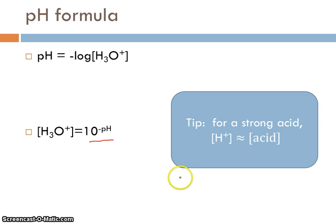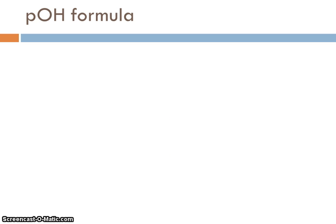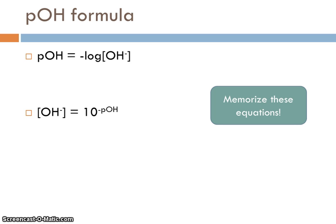The other thing I wanted to point out is that for a strong acid, because of the 100% dissociation, the hydrogen ion concentration is essentially that of the acid concentration. Again, it's that 100% dissociation. That's a handy thing to remember when you're doing the problems. We can develop similar equations for the pOH. We can define the pOH as the negative log of the hydroxide ion concentration. And similarly, if we know the pOH, 10 to the negative pOH will get us back to the hydroxide ion concentration. You need to be able to do these formulas, and really it's important that you memorize these equations.